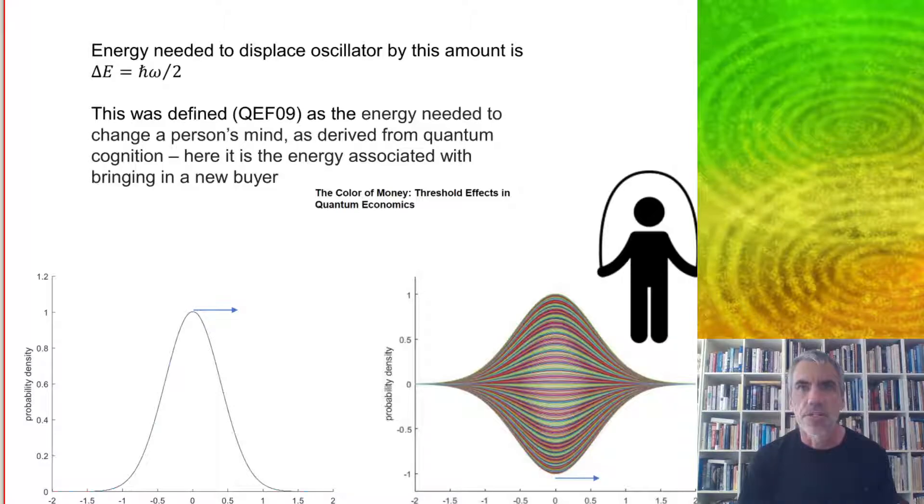And the energy needed to displace the oscillator by this amount is delta E equals Planck's constant times the frequency divided by 2. This was defined earlier as the energy needed to change a person's mind as derived from quantum cognition. So here's the energy associated with bringing in a new buyer.